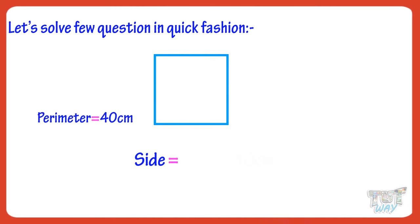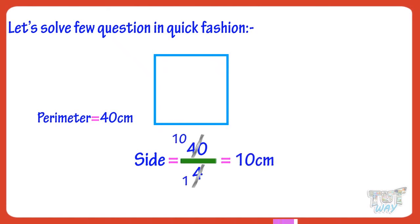Side of square with parameter 40 cm will be 40 divided by 4, equals 10 cm.